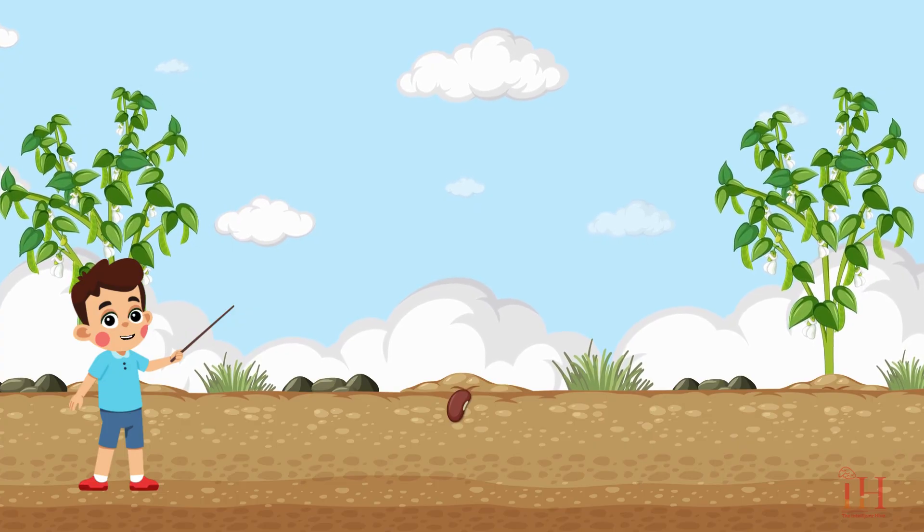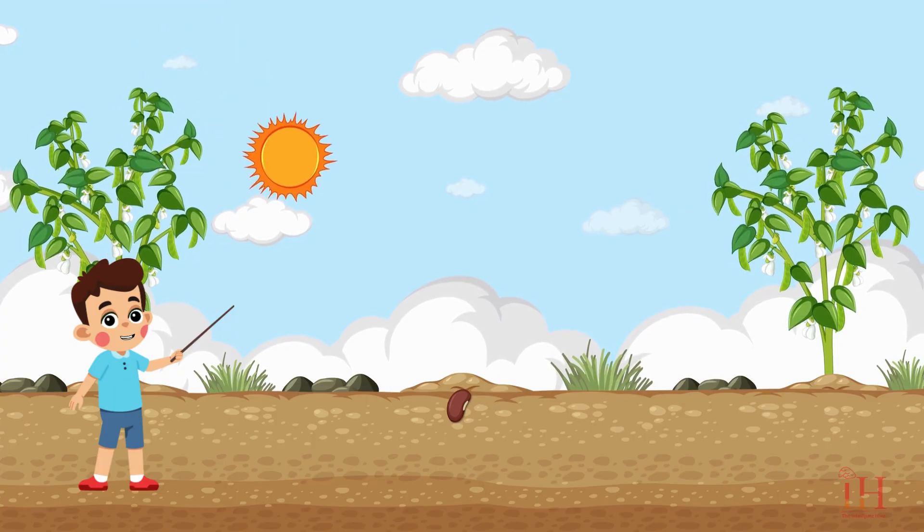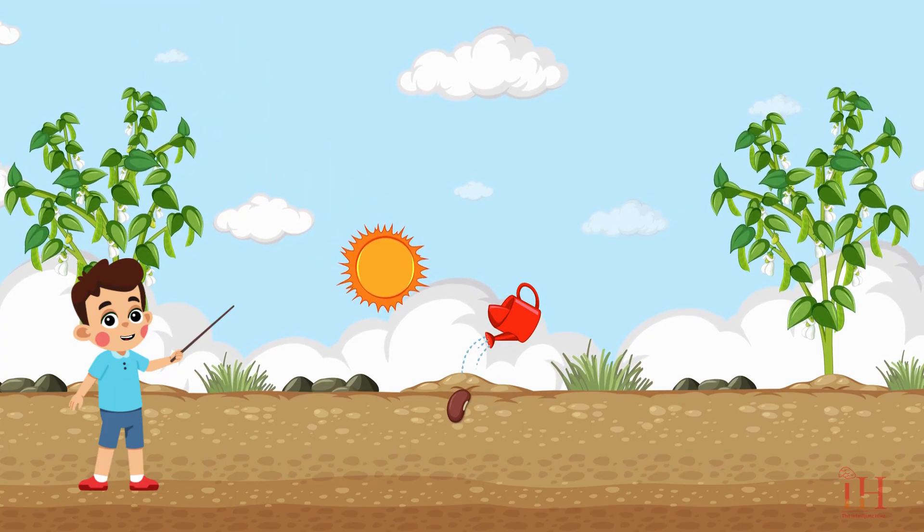With water, sunlight, and soil, a seed will sprout, grow roots, and become a plant.